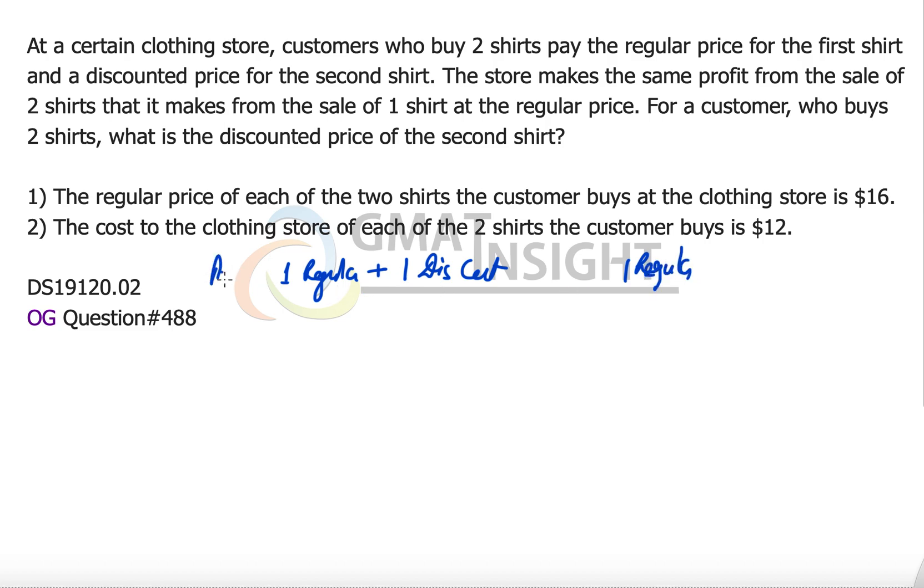So if the profit in the two scenarios are the same, then it only means that the discounted shirt is not leading to any profit, because the profit here for one regular shirt should be the same on both sides.